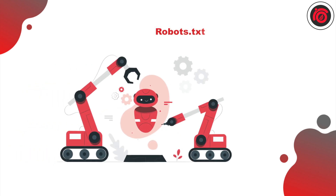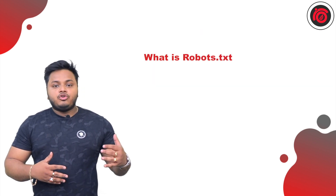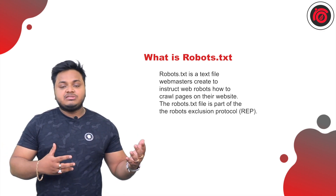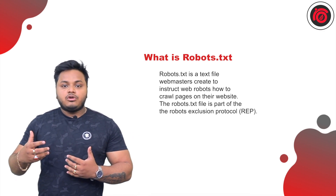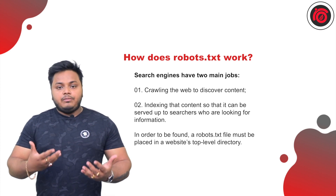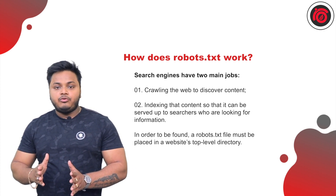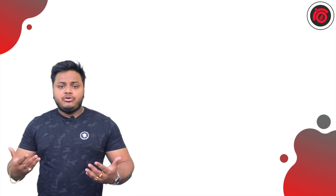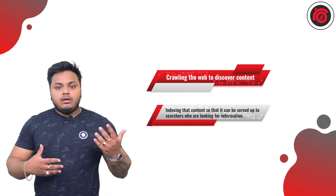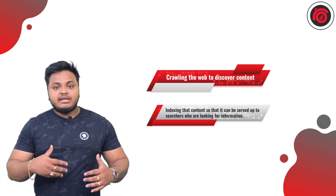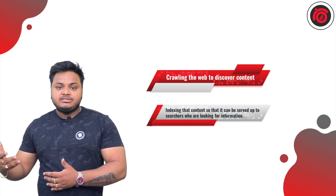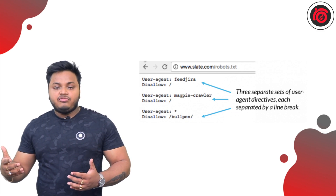Robots.txt is a text file which is used by webmasters for instructing Google crawlers and bots such as spiders on the conditions for crawling and indexing of a particular website. For instance, with robots.txt one can instruct crawlers on how to crawl a website, which pages to crawl, which pages not to crawl, and more. It can also be used to block or highlight a particular page depending on its importance in indexing, de-indexing, or crawling.